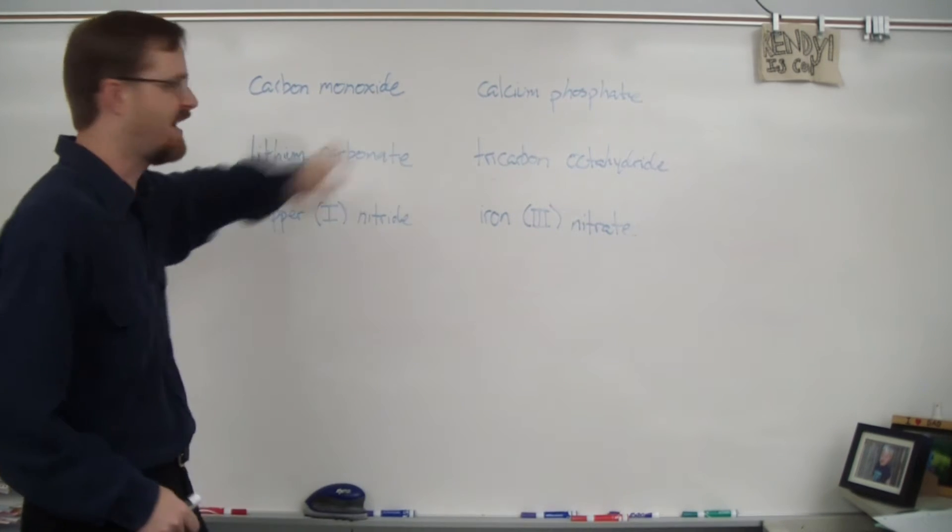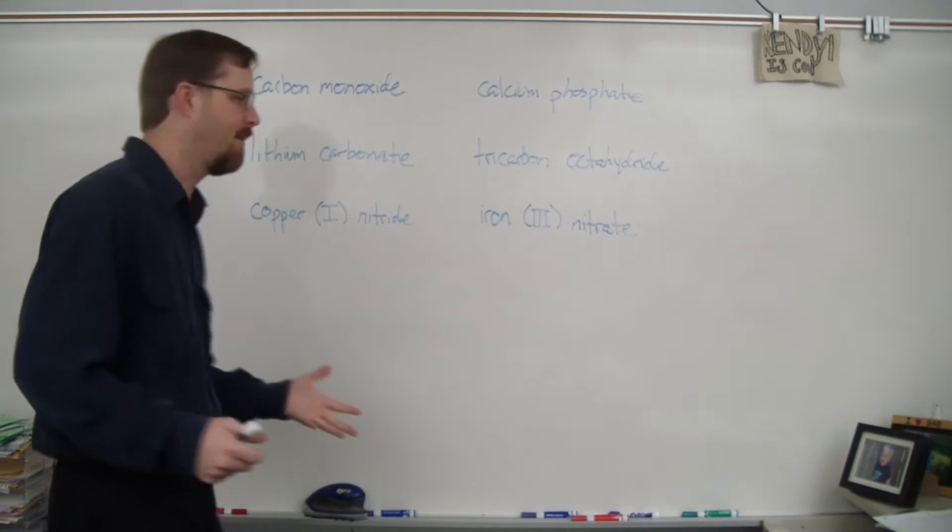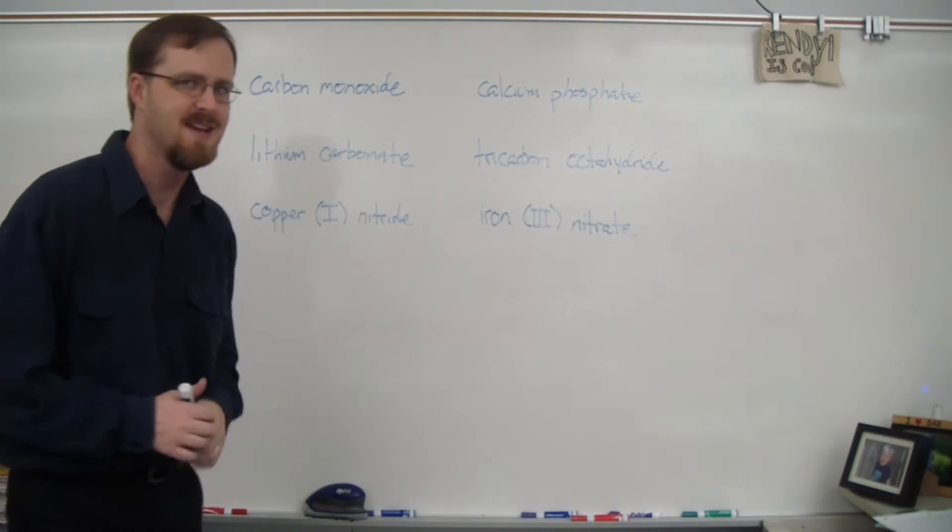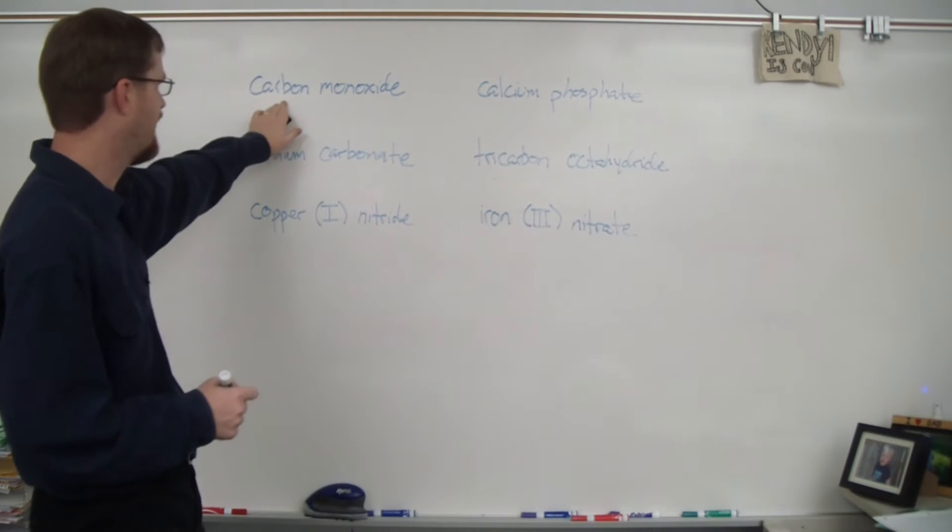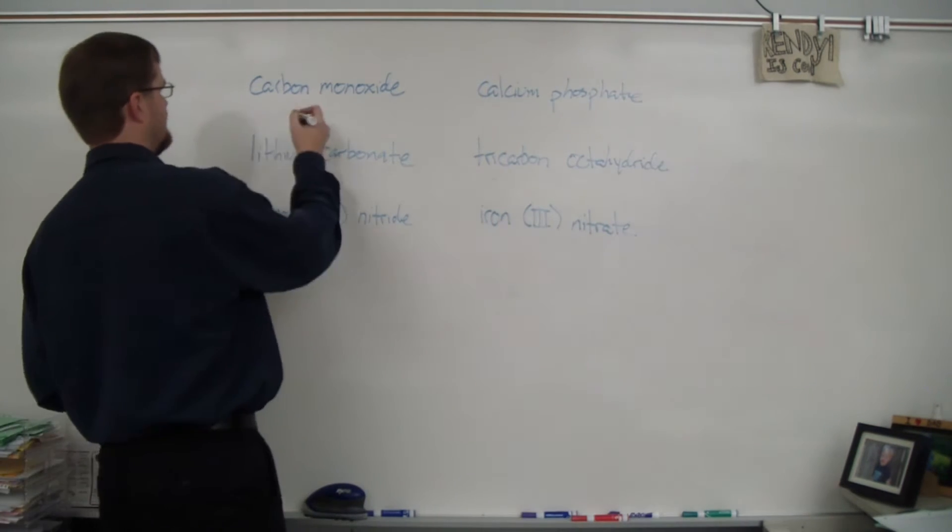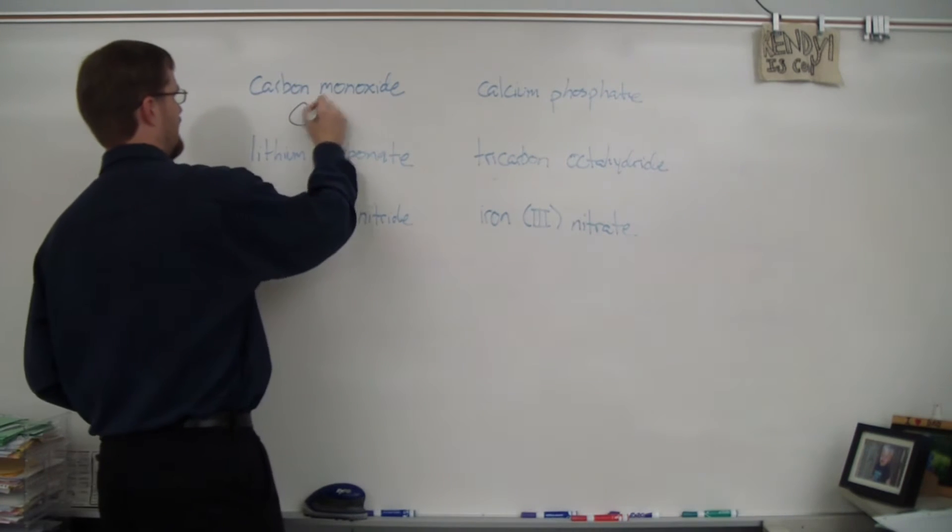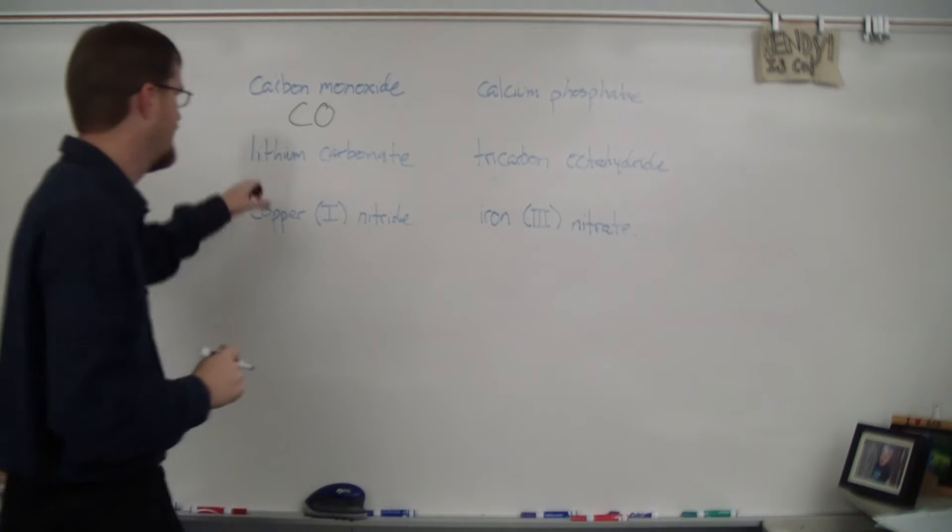Carbon monoxide. So the fact that we have this prefix mono right here means that this is a covalent compound and all I got to do is just write the subscripts as I see it. So we got carbon. There's no prefix which means that it would be mono if there was something, so there's just one. So C. Mono means one. Oxygen. CO. All right. Next one.